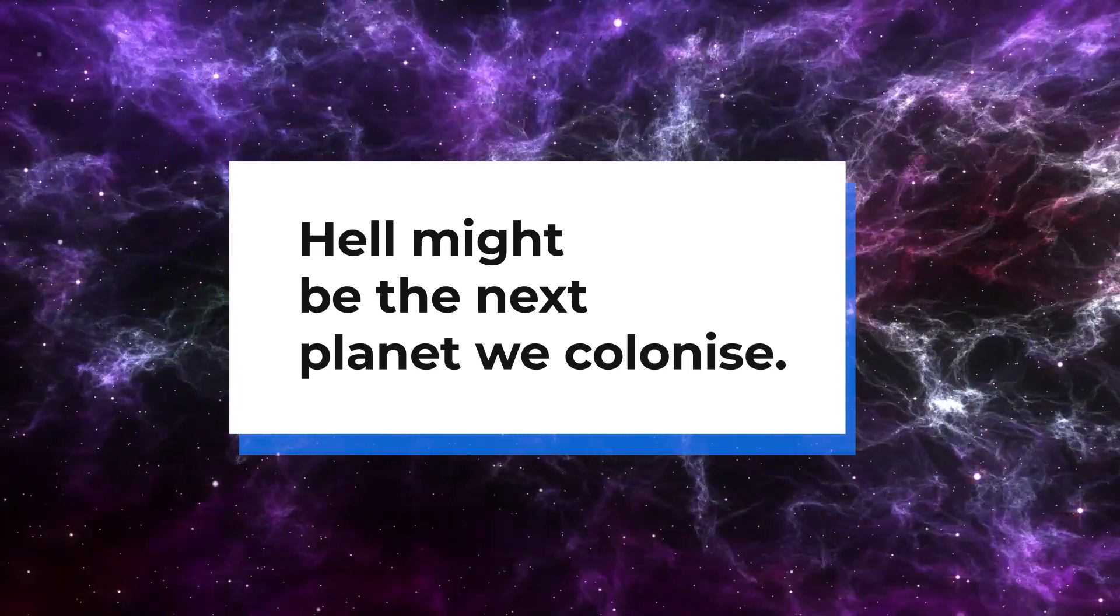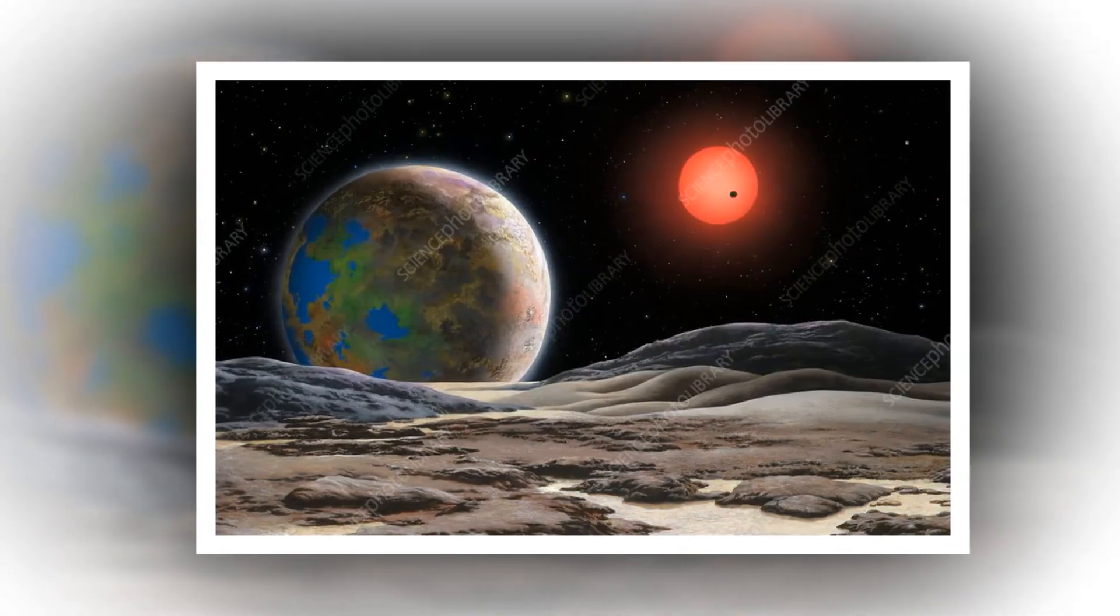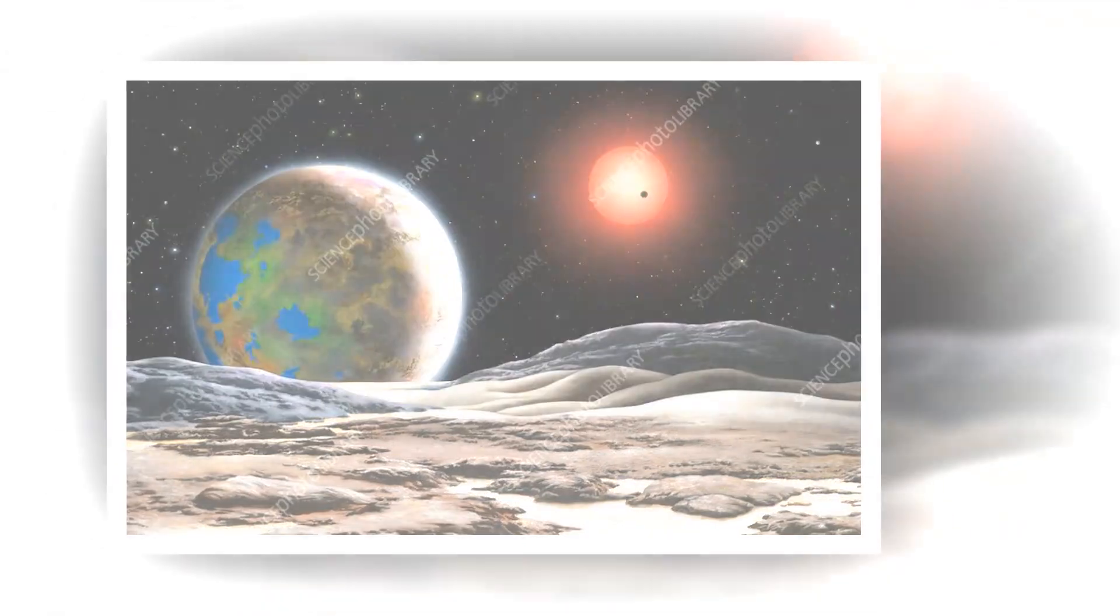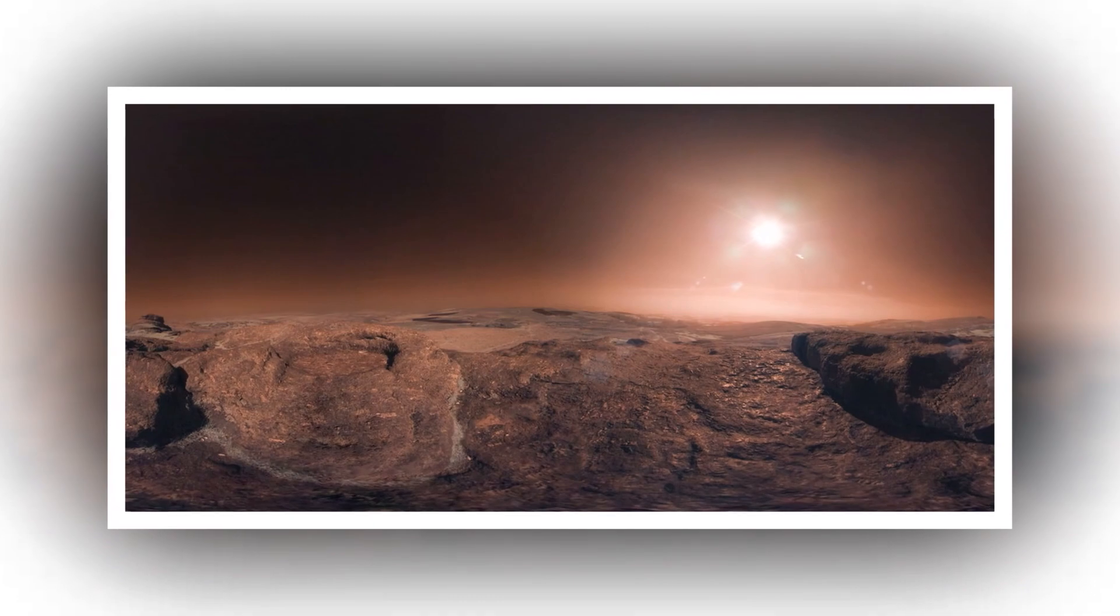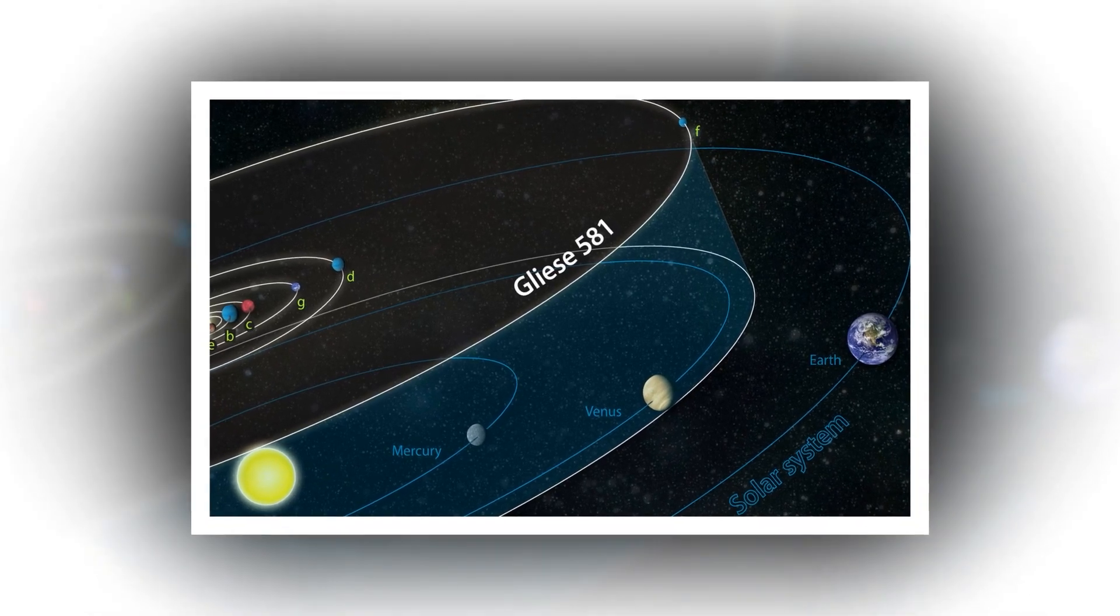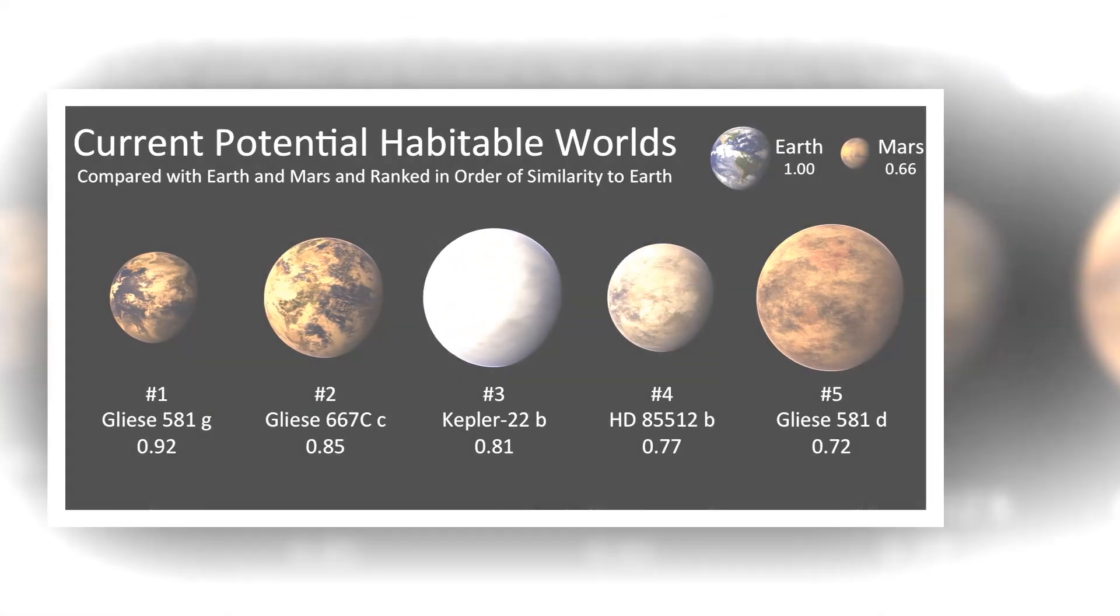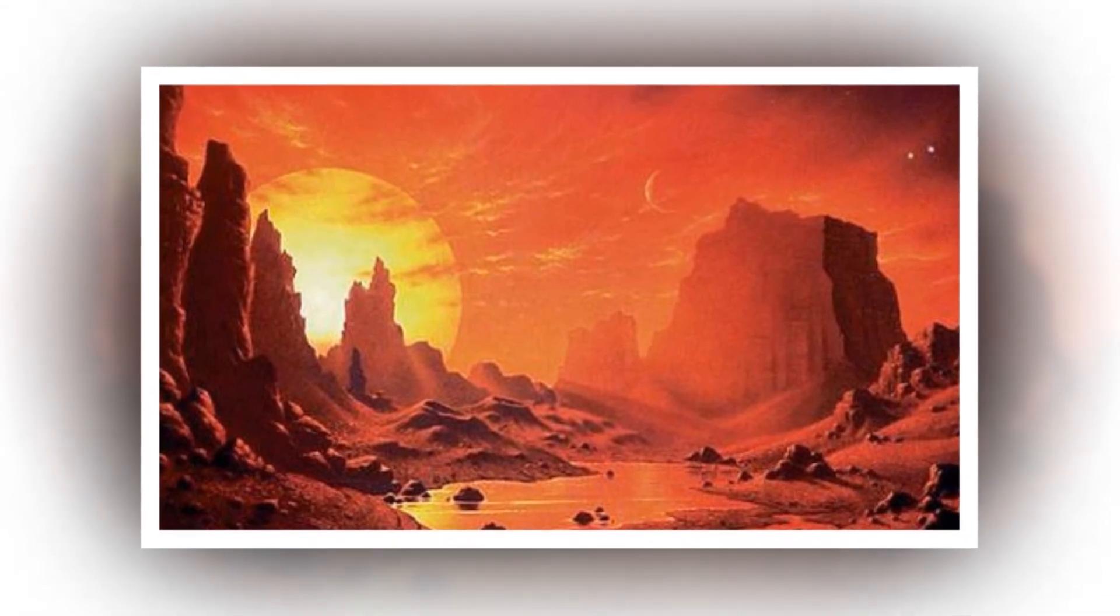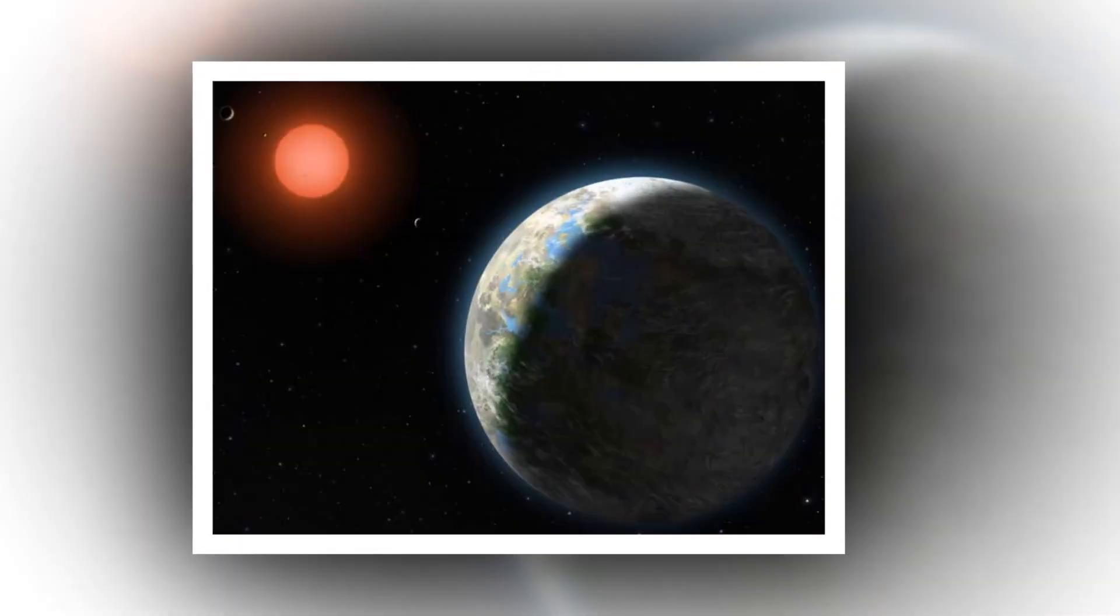Number 4. Hell might be the next planet we colonize. Gliese 581c is a red dwarf star orbiting a much smaller red dwarf star than our Sun that is almost entirely unfriendly to life. Gliese 581c is in a state of tidal locking that prevents it from spinning while it orbits as a result of its proximity to the Sun. As a result, half of Gliese 581c is permanently exposed to the Sun and enjoys temperatures warm enough to roast a few marshmallows, while the other half is completely in the dark and extremely cold. As a result, only a very narrow vertical span of the planet may be inhabited by humans, and this belt would be the site of the envisaged colonization.